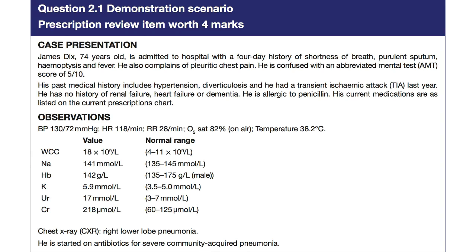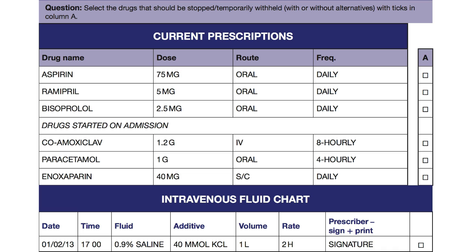He's allergic to penicillin. Reviewing his observations and blood tests, we see a picture compatible with sepsis with raised inflammatory markers, reduced renal function and hyperkalaemia. Next we are asked to review his current drug chart and mark any drugs that should be stopped. Take a moment, given the situation described, to look at each of the drugs and consider whether it is appropriate. Feel free to pause the video if you need more time.